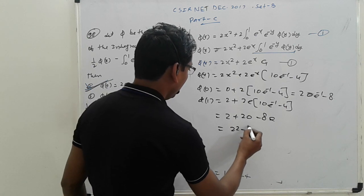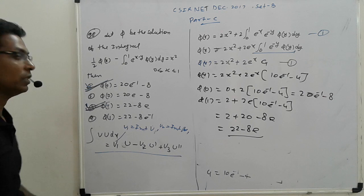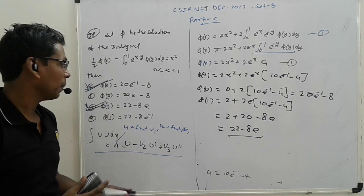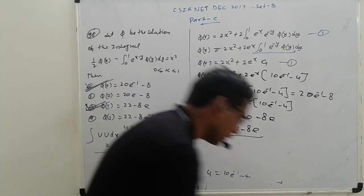So 22 e minus 8 e. That is the answer is correct. So 1st and 2nd, 2 options. 1st and 3rd option is correct, remaining is wrong. So that is method.